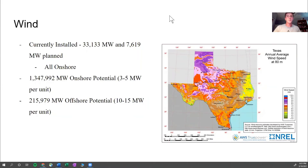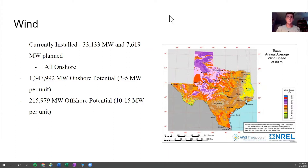Hello everyone, I'm Malcolm, and I was responsible for wind, hydrogen storage and power, as well as biogas for our project. Texas currently has 33,133 megawatts of installed wind, the largest capacity of any state within the U.S. This is because of the large amount of potential Texas has — upwards of 1,350 gigawatts of onshore wind generation and 216 gigawatts of offshore generation.